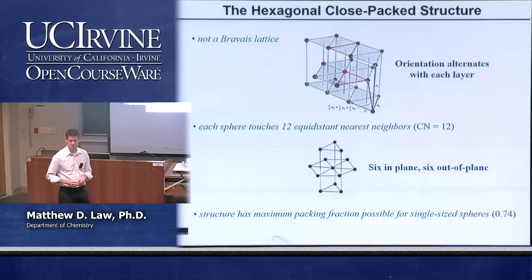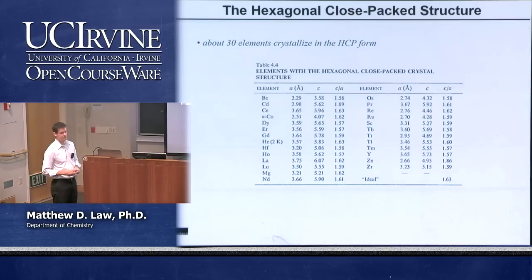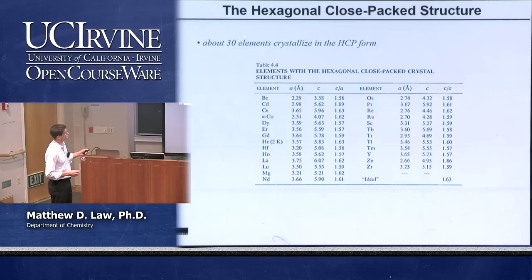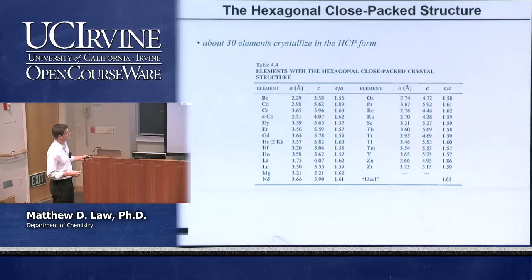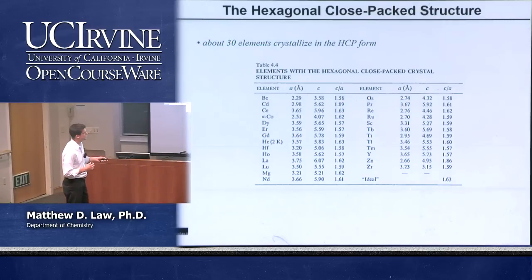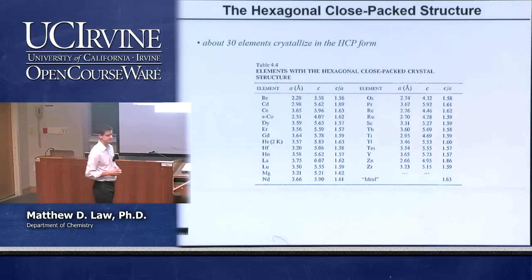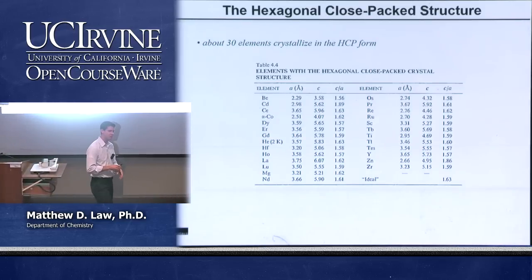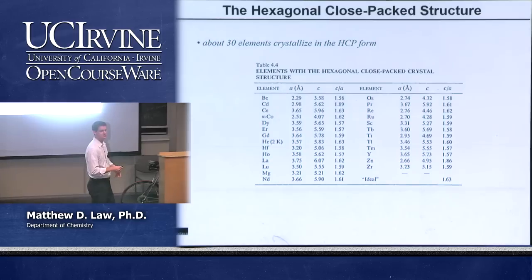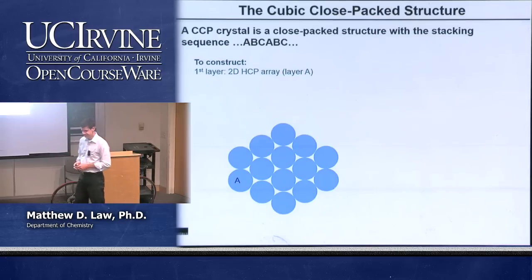HCP is a very important crystal structure for elemental solids — over 30 elements adopt it. A table shows the A and C lattice constants and their ratio C/A. The ideal C/A ratio for incompressible hard spheres is 1.63, and many real structures come close to this. In reality atoms are compressible and deformable, so the hard-sphere model is an idealization, but a useful one.